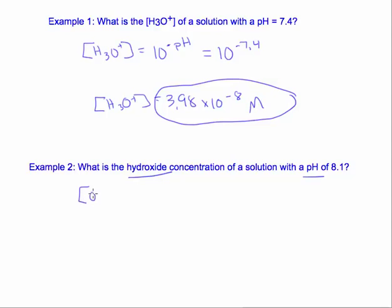Remember, we know the concentration of hydroxide is equal to 10 to the negative pOH. But with our pH, we can get our pOH pretty easily. It would be 14 minus 8.1. Our pOH is 5.9.